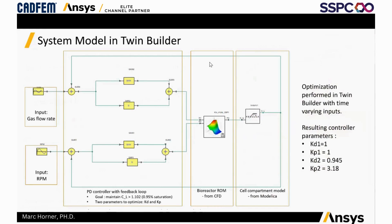In the TwinBuilder digital twin model, we have the bioreactor ROM representing our CFD simulations of the design space, and our Modelica metabolic model. These simulation components are connected upstream to gas flow rate and agitation rate data coming into the digital twin. We also have controllers — in this case we set one goal: to keep the dissolved oxygen concentration above a certain level in the tank, specifically above 95% oxygen saturation.